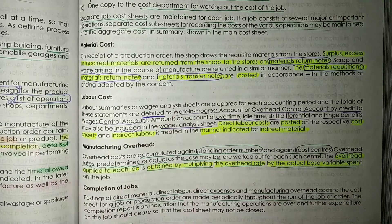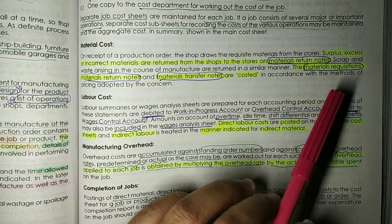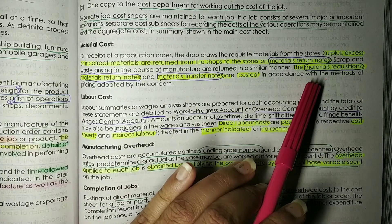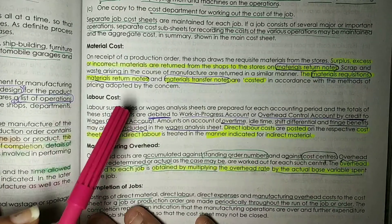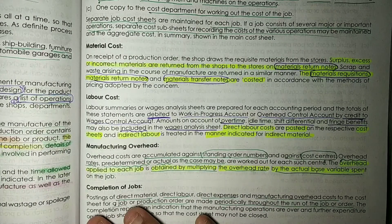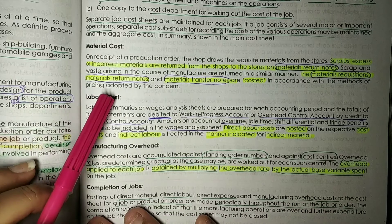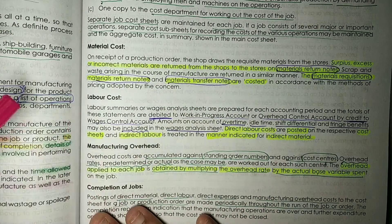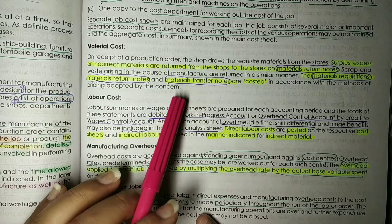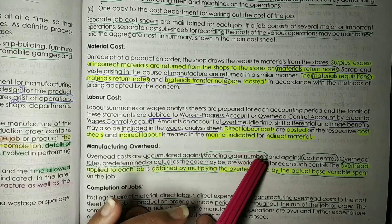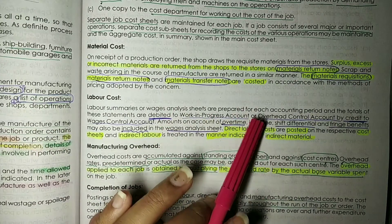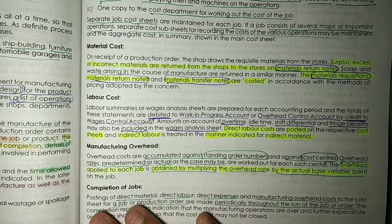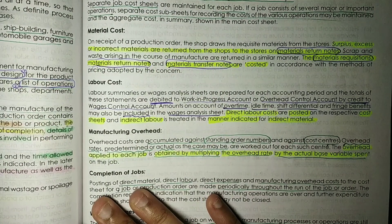There are three types of notes. First, materials requisition notes — what we draw from the store. Second, materials return notes — for materials returned unused or incorrectly issued. Third, materials transfer notes — for materials transferred between departments. Finally, we make a job cost sheet to calculate the cost of that particular job.